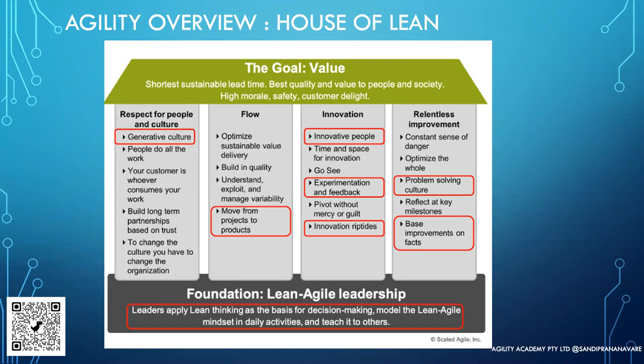Once you gain their confidence, it becomes easier to bring in changes. The second pillar is flow — ensuring you can deliver things at a sustainable pace without anything getting stuck in the system. A good analogy is traffic: you don't expect all roads to be occupied all the time, because if a car breaks down in an emergency, everyone gets stuck. Similarly, a flow-based system expects predictability and the ability to deliver at a sustainable pace.